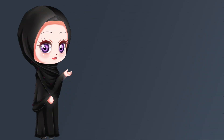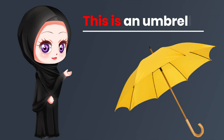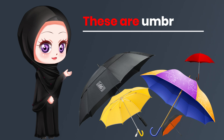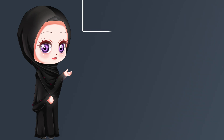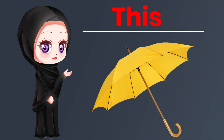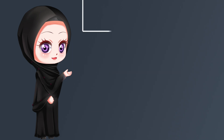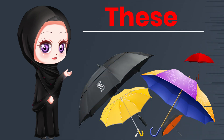Now, let's see one more example. This is an umbrella. These are umbrellas. I've used the pronoun 'this' for one umbrella close to me, and I have used the pronoun 'these' for more than one umbrella near to me. Understood?